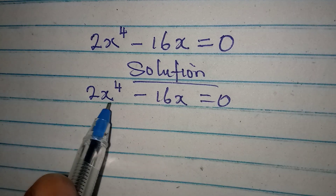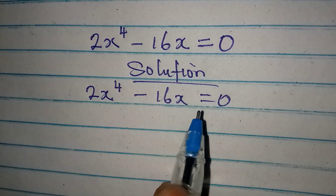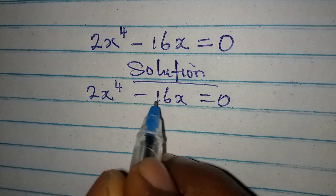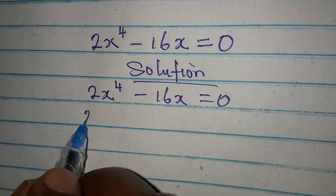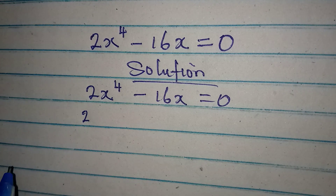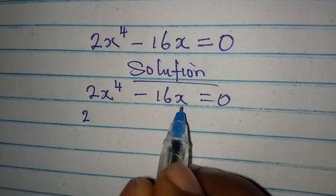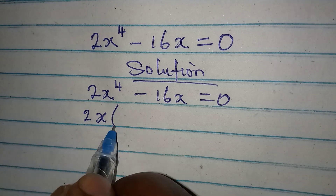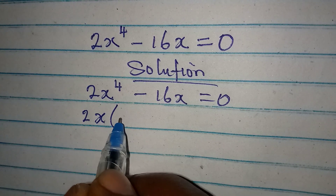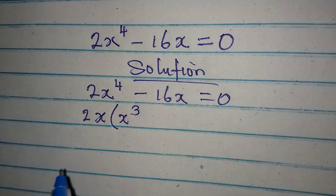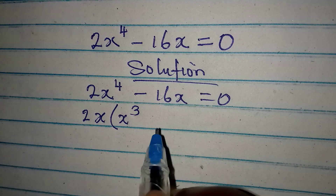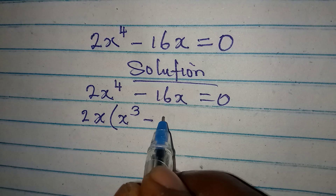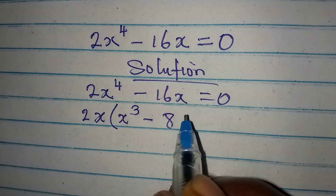The first thing we can do is factor out common factors. 2 is common, so bring out your 2. x is also common, so bring out your x. Then open the bracket — x to the power of 3 will be left, minus 8, since 2 into 16 is 8 and x is already outside.